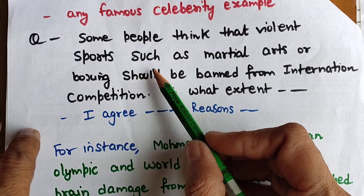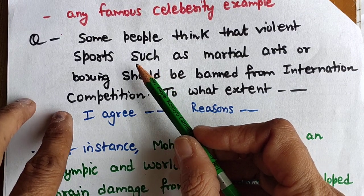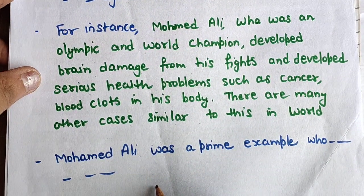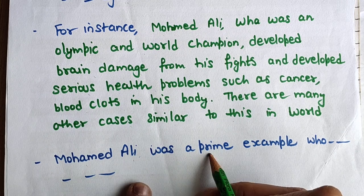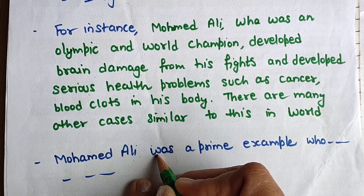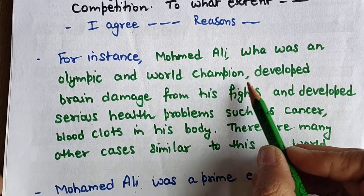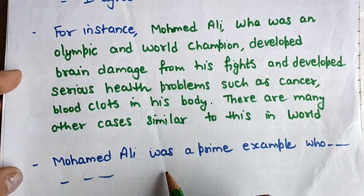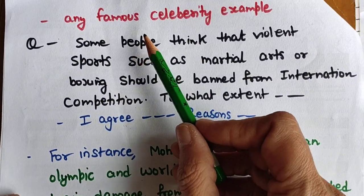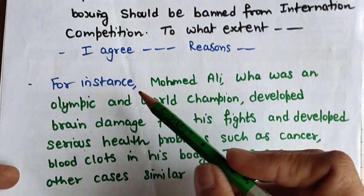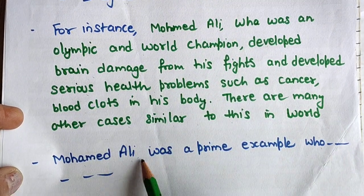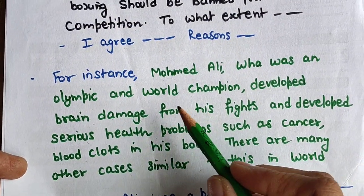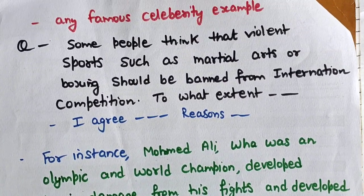There are two sentence structures you can use for celebrity examples. First: 'For instance, Muhammad Ali developed brain damage from his fights...' Second: 'Muhammad Ali was a prime example who developed brain damage from his fights.' Both work well. So these are the main ways to add examples in your IELTS writing task 2 essay. Thank you so much for watching.